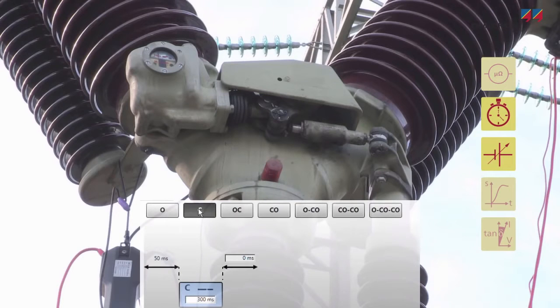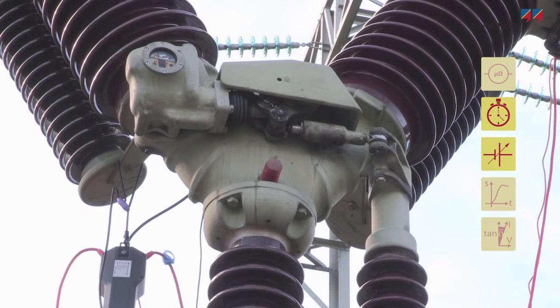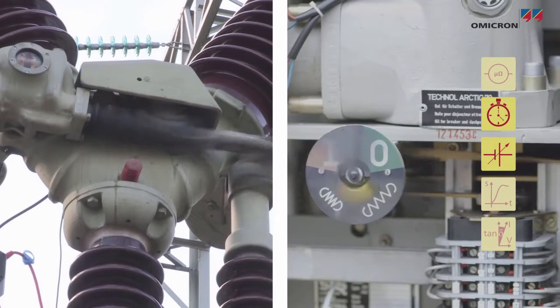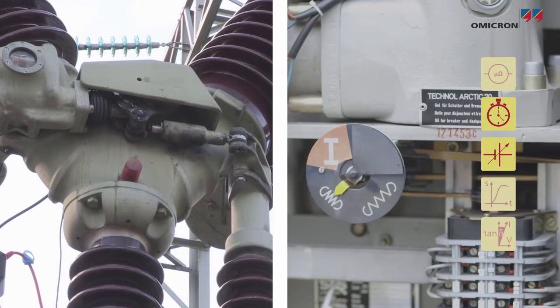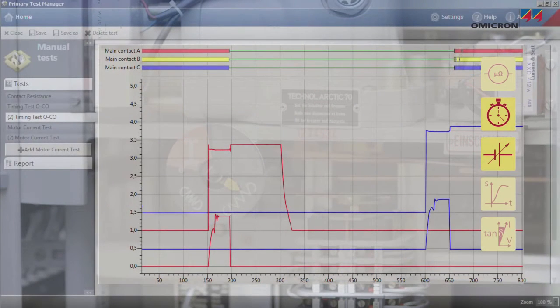An analysis of the opening and closing times of the circuit breaker contacts can validate mechanical performance. Differences between individual contacts and individual phases must fall within defined limits. Comparing these results to factory data or earlier measurements can reveal trends.